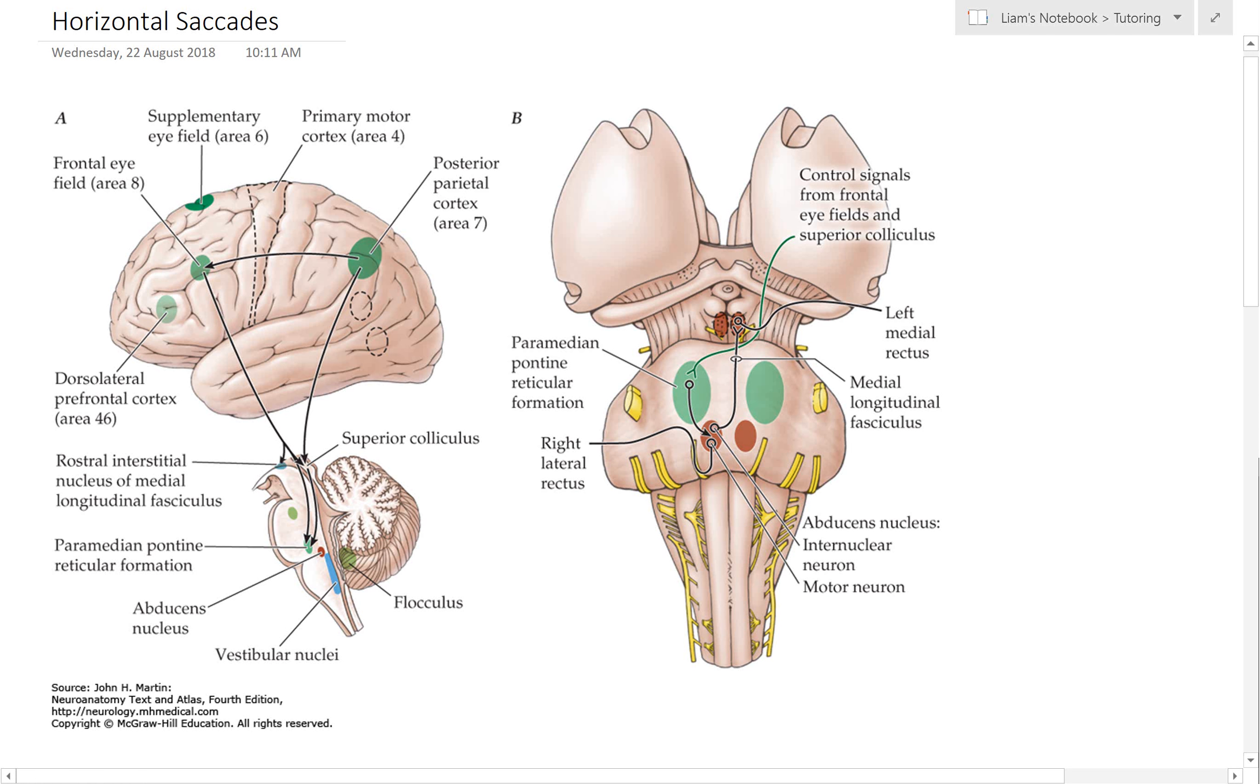This diagram I've put up here is quite complex, but it will illustrate the key areas we're going to talk about. Most of what we'll discuss today is located in the pons, in the brainstem. We're going to cover the paramedian pontine reticular formation or PPRF, the MLF (medial longitudinal fasciculus), and the different nuclei for the cranial nerves involved in eye movement.